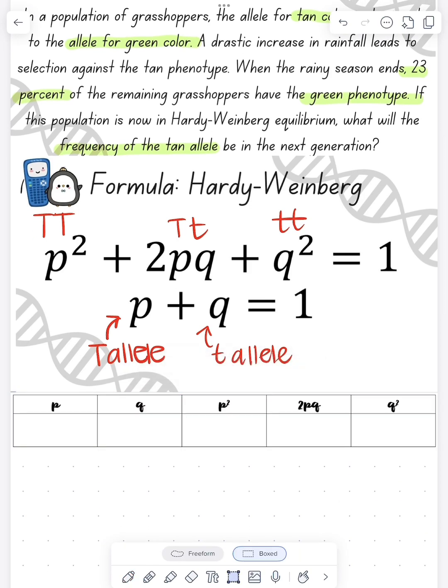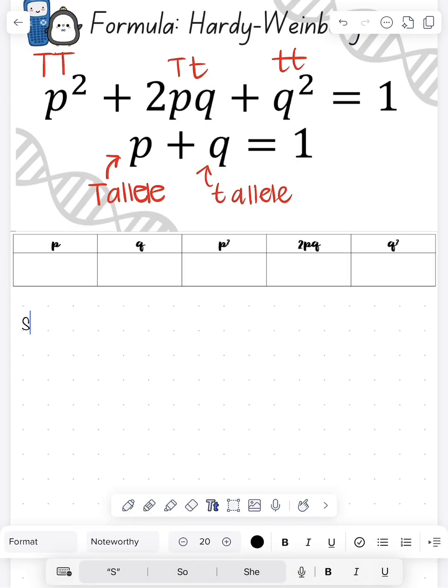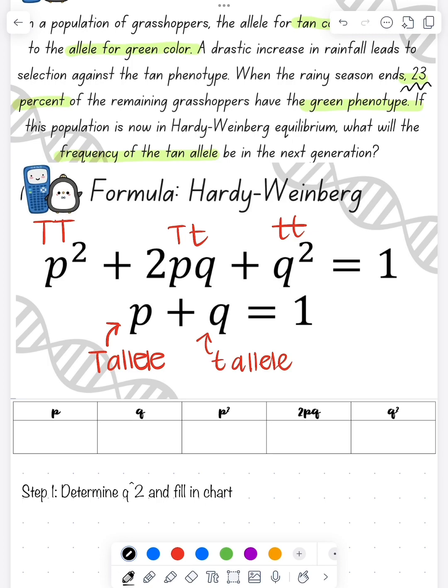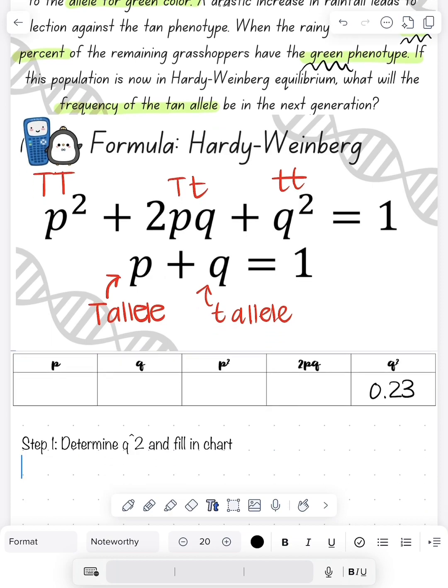Now we need to make this chart. I always do this chart whenever I do these problems. So looking at the question, our first step is to figure out what is our q squared. We only want to start with q squared. We see that 23% are green, which we know is the homozygous recessive. So we go ahead and fill that in for q squared.